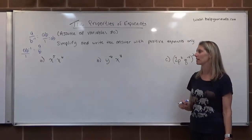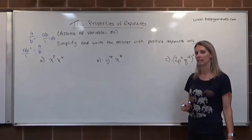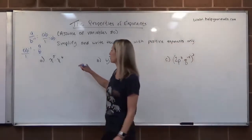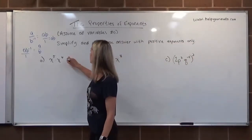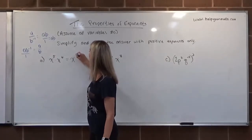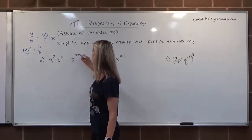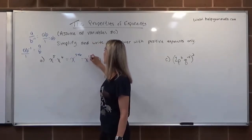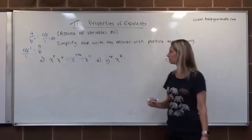For letter A, we have x to the 5th times x to the 6th. That's same base multiplication. For same base multiplication, we add the exponents: 5 plus 6 gives us x to the 11th.